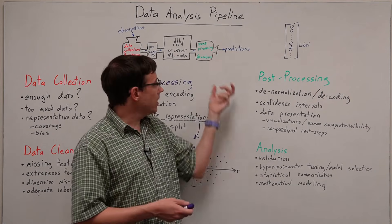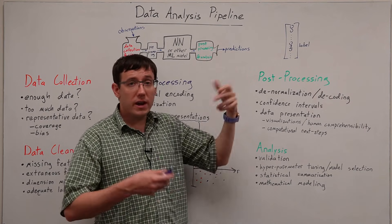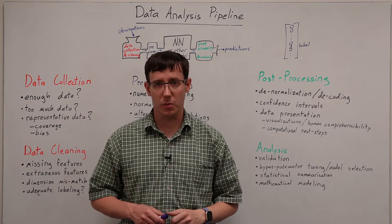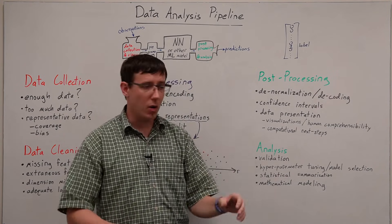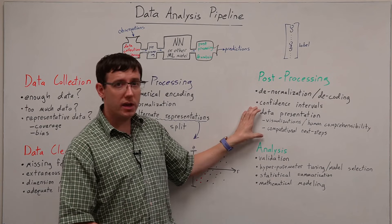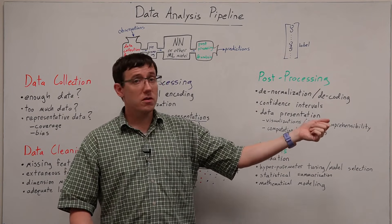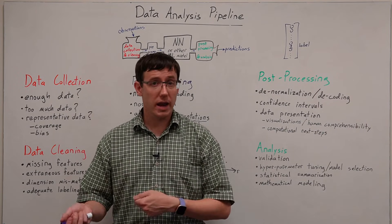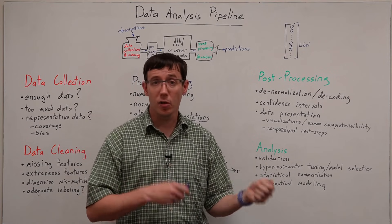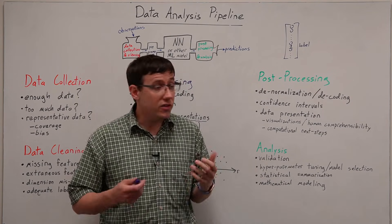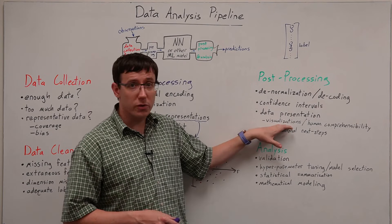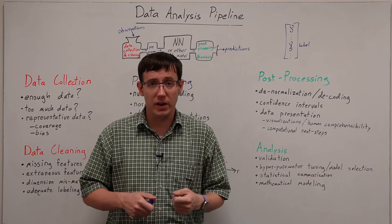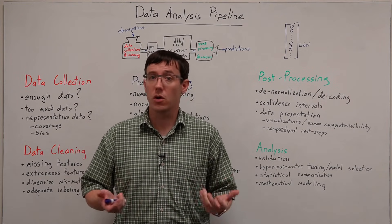We might also want, as a post-processing step, to convey information about how confident we are in various predictions the neural network is making. And we need to think about what will be done with the predictions that our model produces. For example, are they going to be interpreted by a human, like, say, a system that is trying to help a doctor make a diagnosis, in which case it might be a very good idea to produce plots or other visualizations that help a human to understand the dataset or the predictions as a whole.